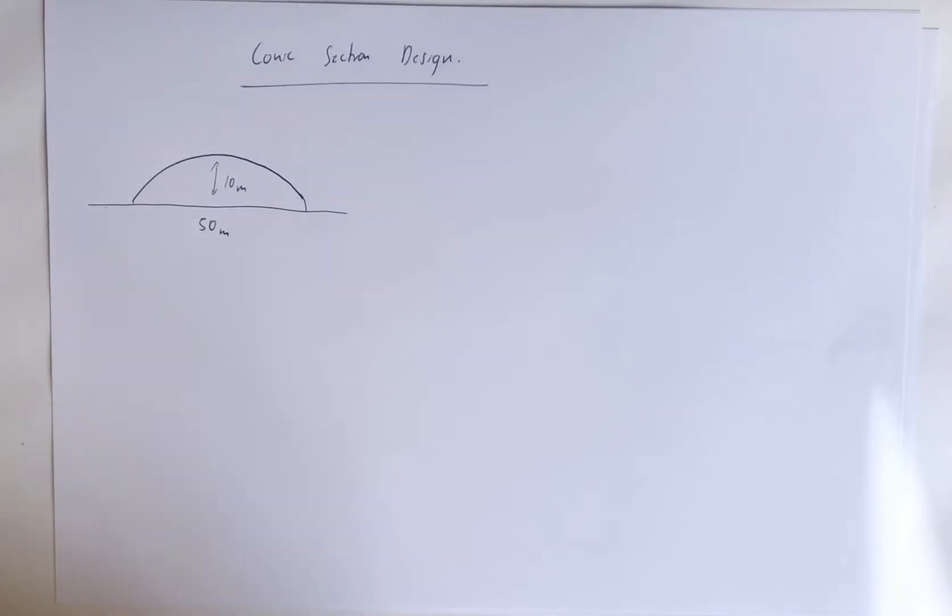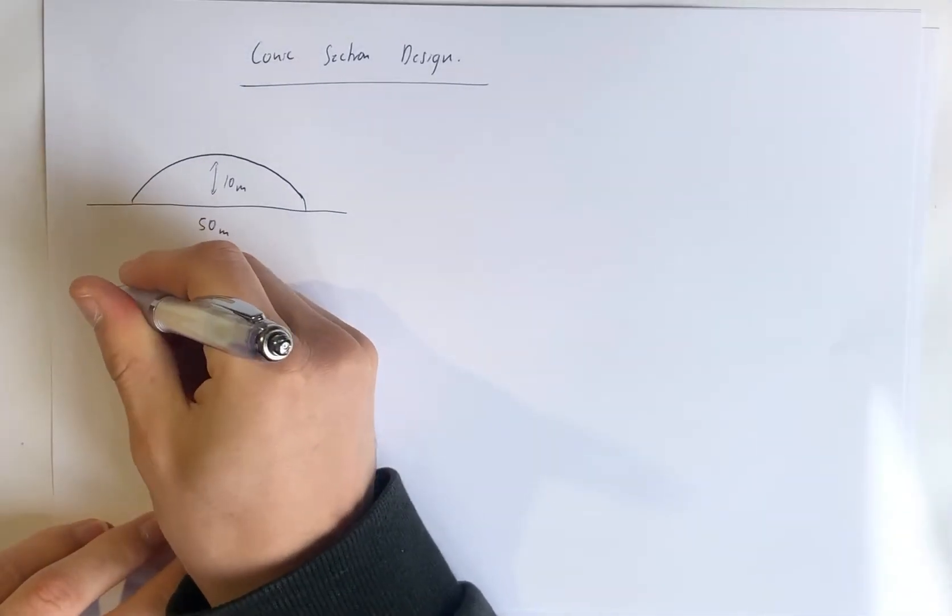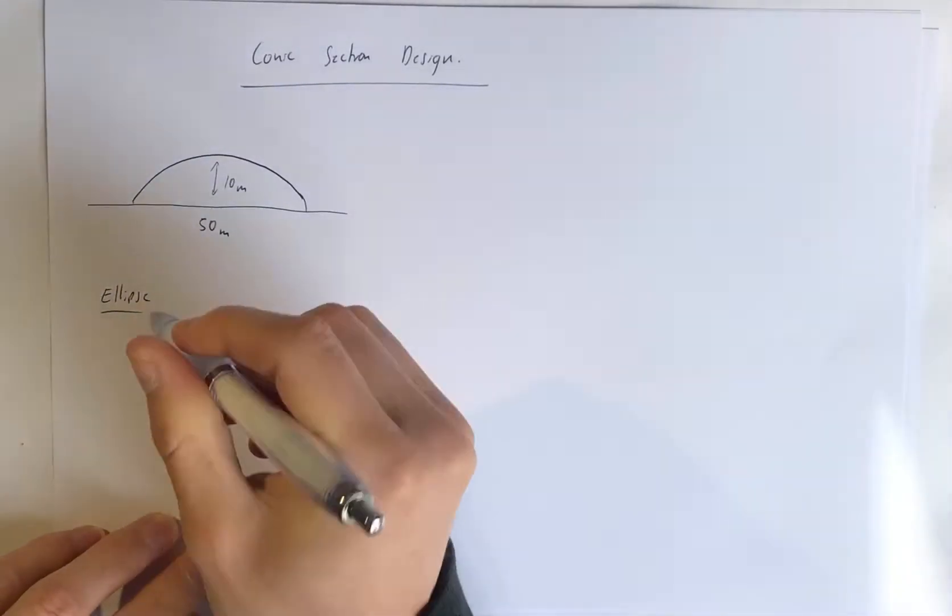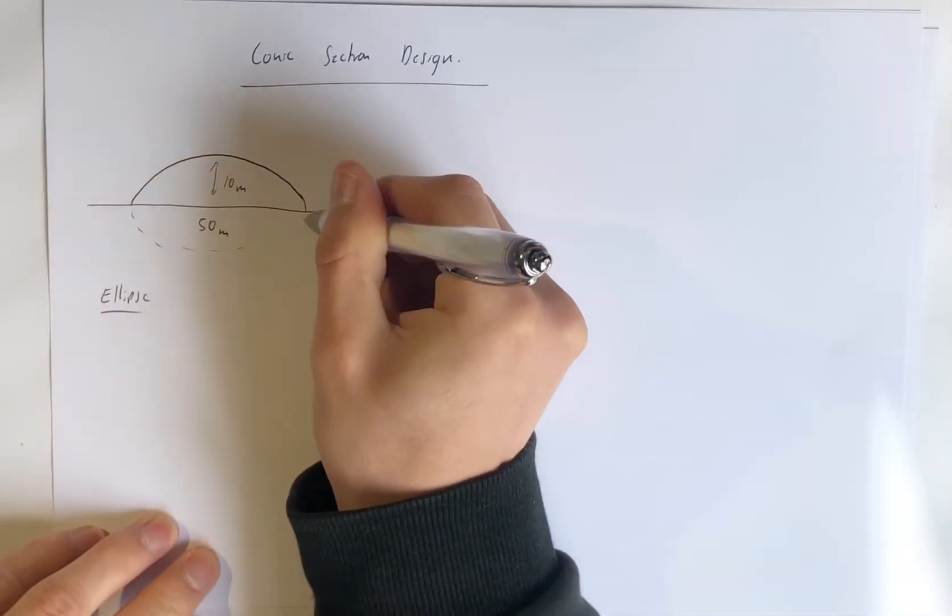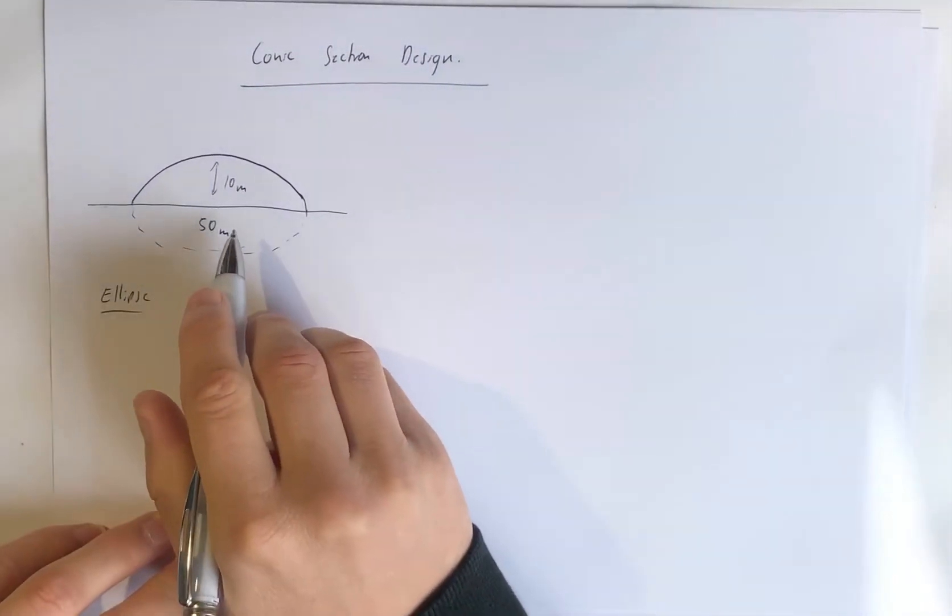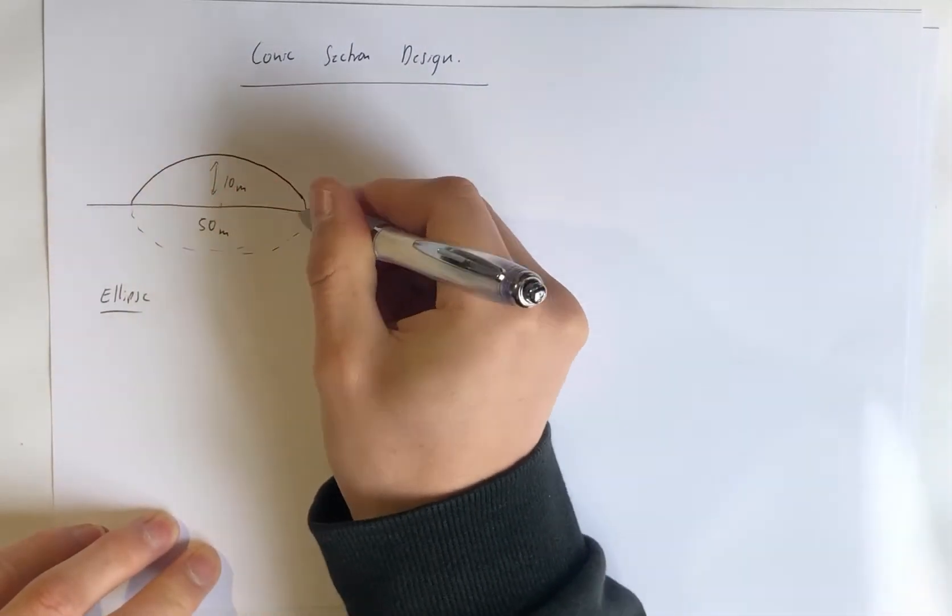The first one we're going to start with is the ellipse. It's usually the easiest, so notice we've got half of the ellipse. If this were to continue on under here like a football shape, then we know that in the x direction, half of that major axis is 25.